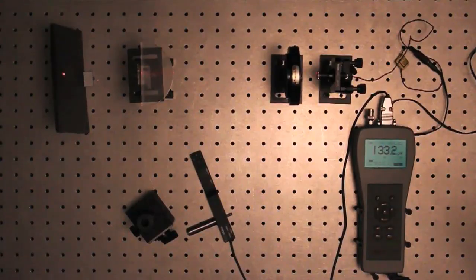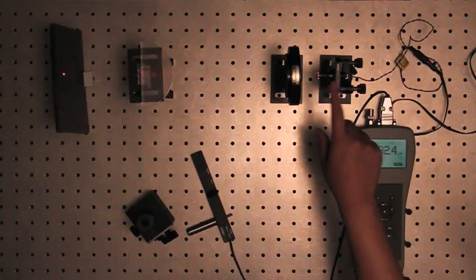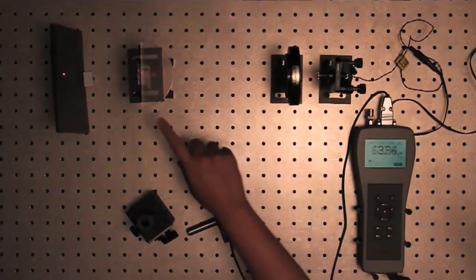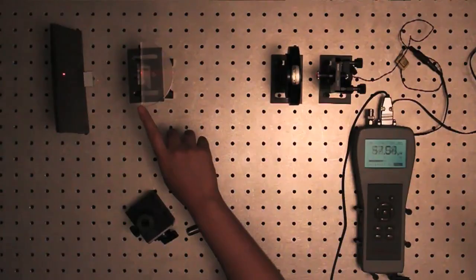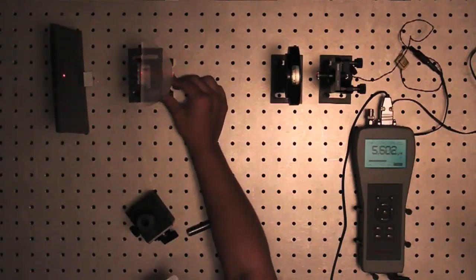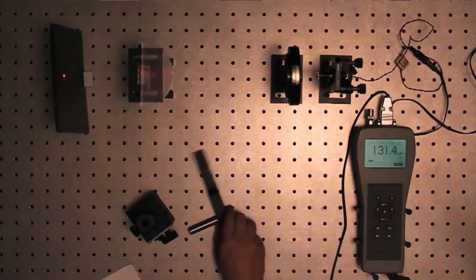Here is the setup as viewed from the top. You will use a red diode laser, a linear polarizer, the acrylic prism mounted on a rotational stage, and a high sensitivity power meter.